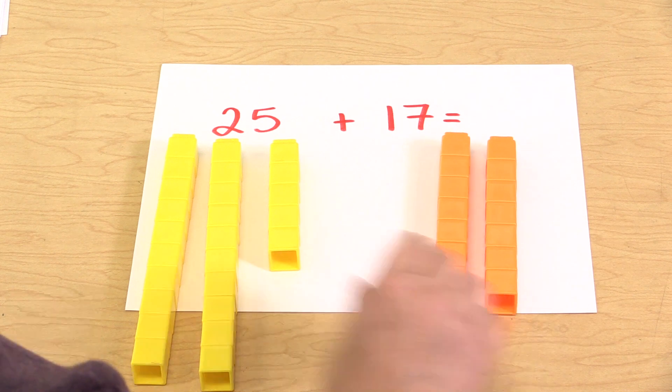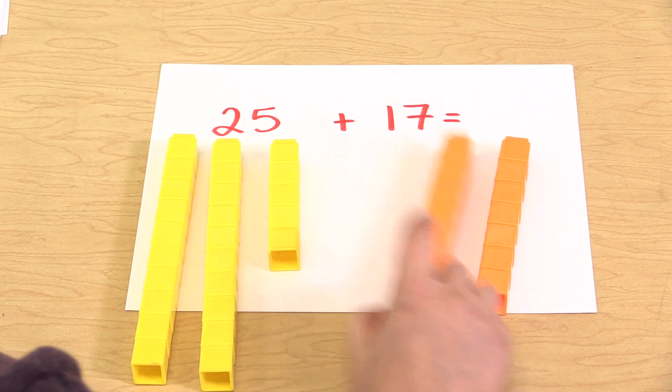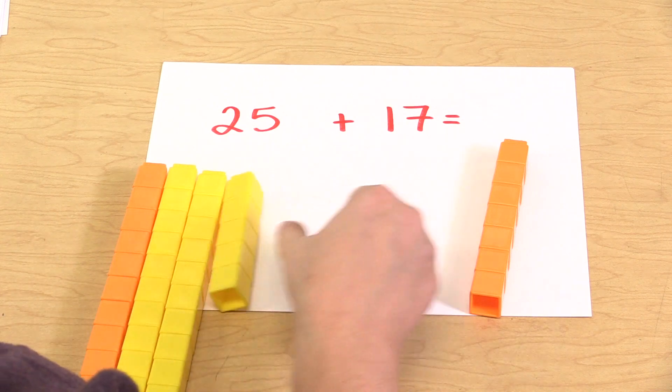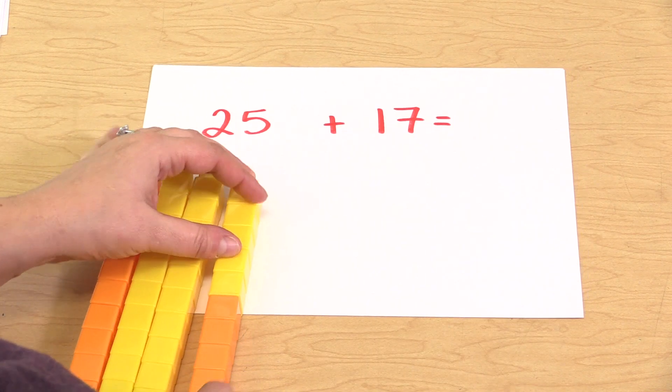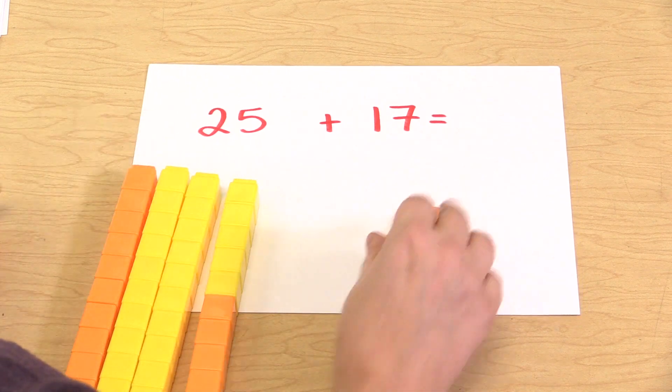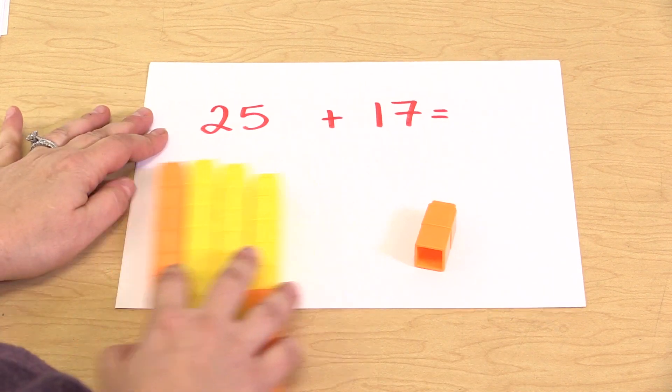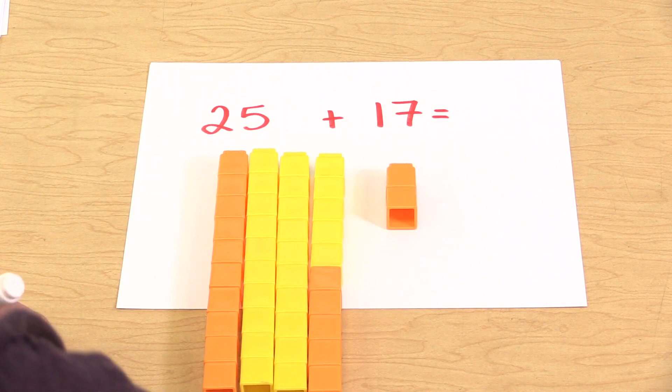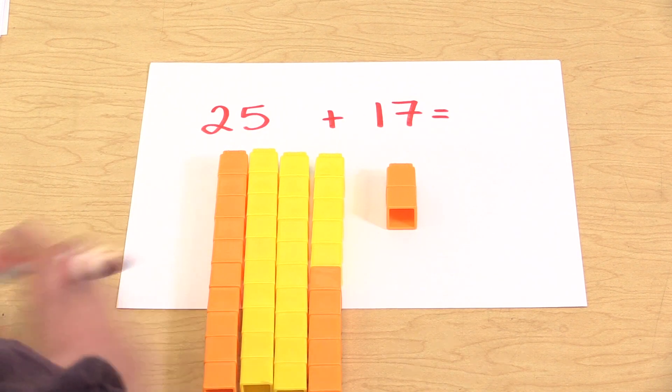And again, we would have the students grouping up the tens first and then the ones, having them connect so that they could see that we've made another 10. So 25 plus 17 equals 42.